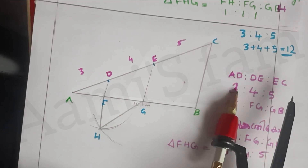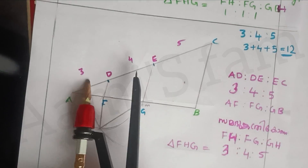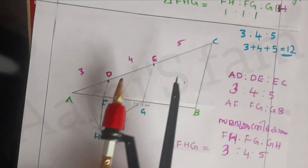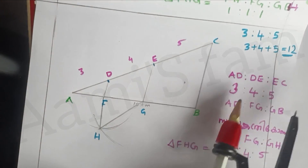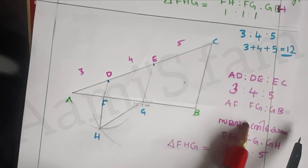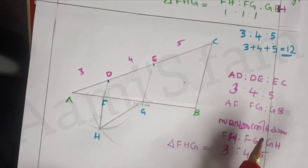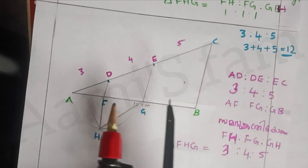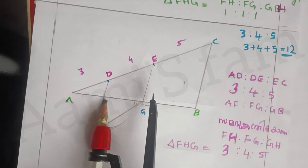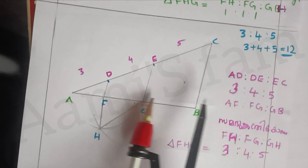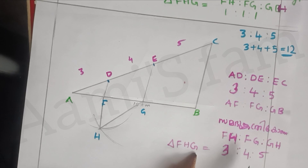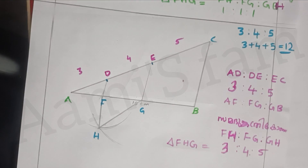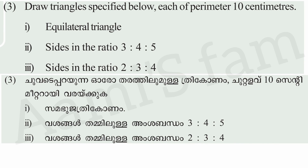AD to the left — AF. DE to the left — FG. EC to the left — GB. All measurements match. This is the triangle. F is the measurement of F, FG is the measurement of G. Now 3:4:5 is the triangle. Next question: sides in the ratio 2:3:4.